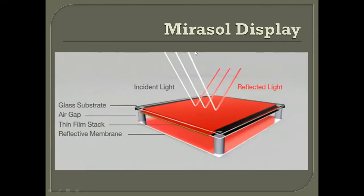In the Mirasol display diagram, incident light enters and is reflected to produce color. The structure consists of a glass substrate, an air gap, a thin film stack, and reflective membranes.